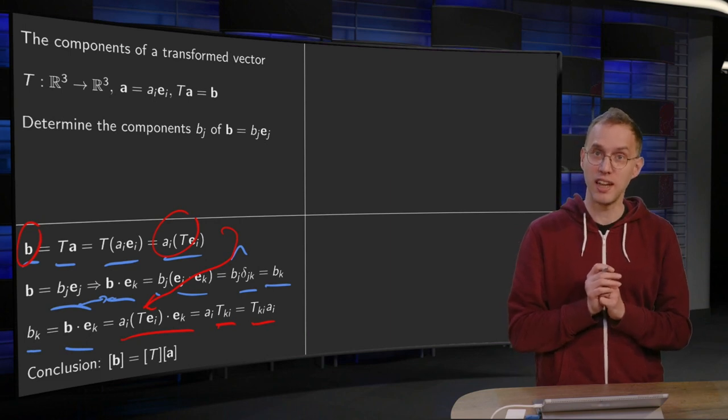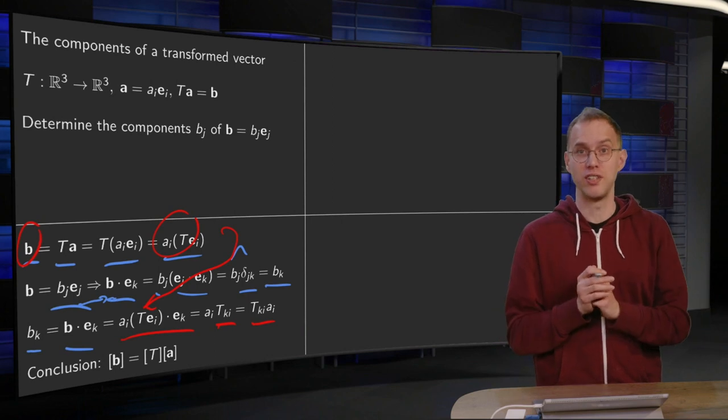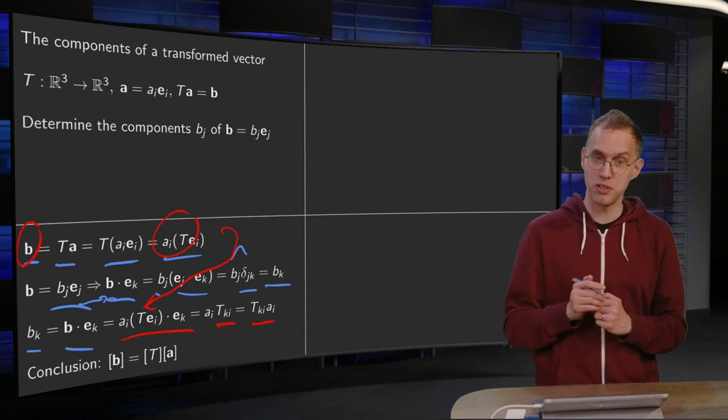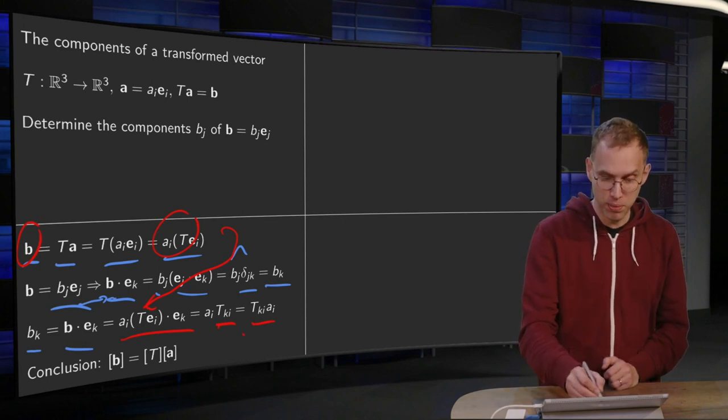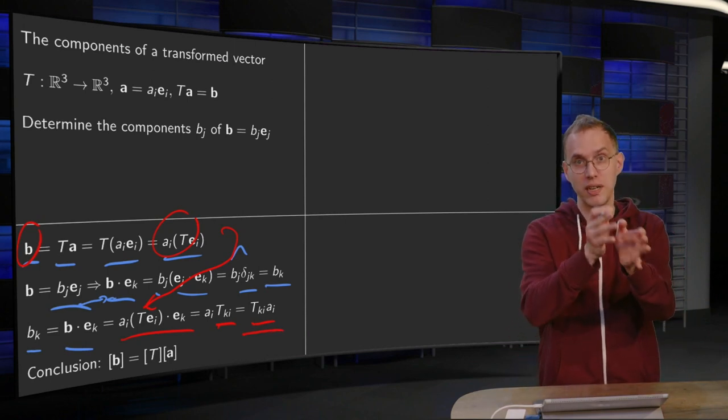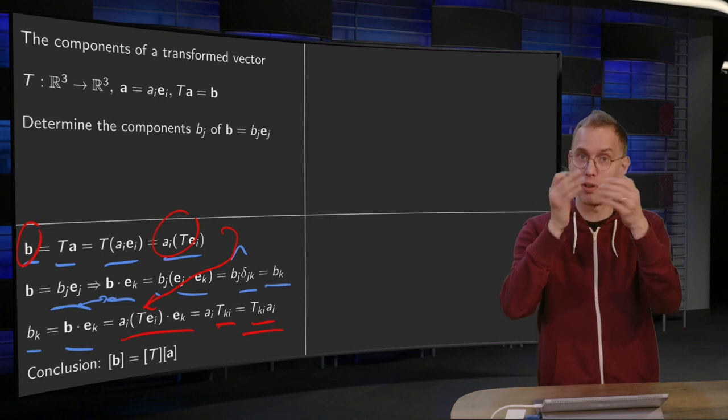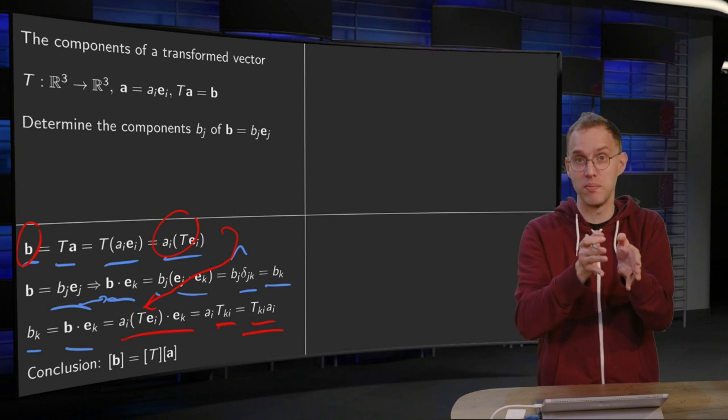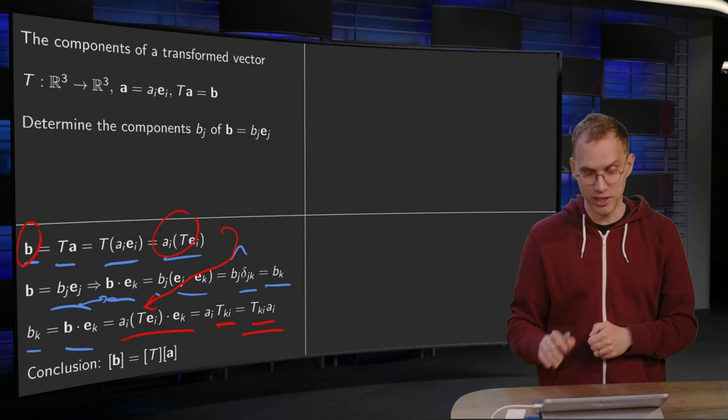So your Bk equals Tki times Ai. And if you write this in matrix form, that's something really nice, because what it says here is the product of the matrix of T times the vector A. So your vector B is the same as the matrix product of the matrix of T times the vector A, just as it was in linear algebra.